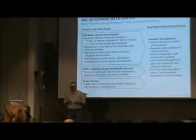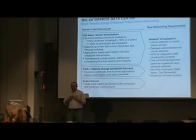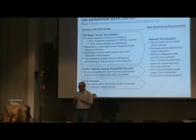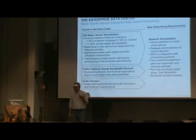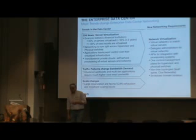Another major change is that the application teams that roll out applications in your data center are no longer deploying one machine that's just connected to the network; they want to shape how their network looks. You might have a multi-tier application with firewalls in between, and that makes things much harder, because suddenly the central networking department has to reconfigure the network every time new virtual machines come online. And then there's the trend towards private clouds, which means you want more of a self-service infrastructure where an employee can go to a portal, reserve a couple of servers and the network in between them, and configure that without human intervention.